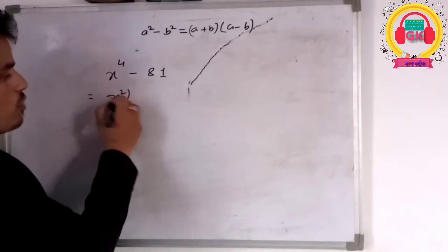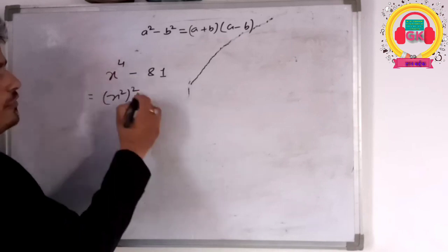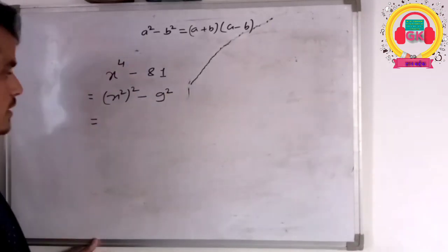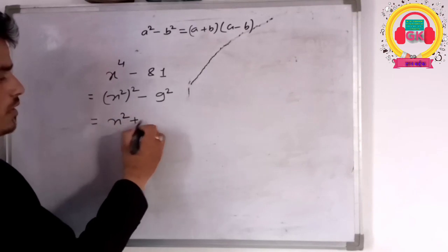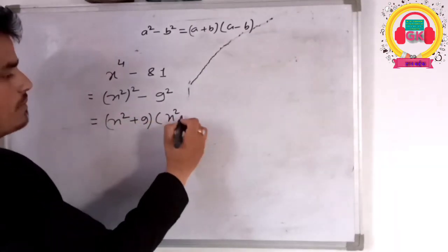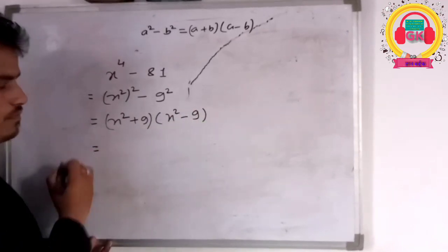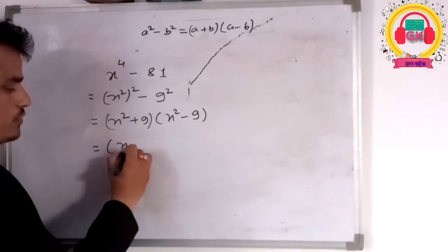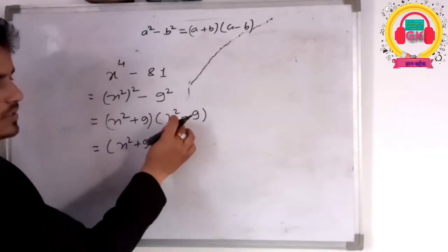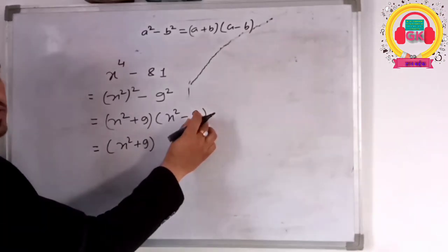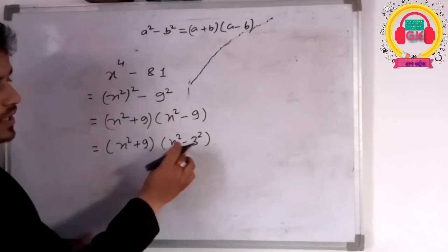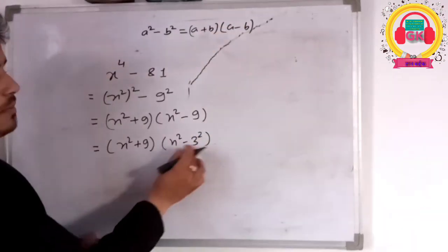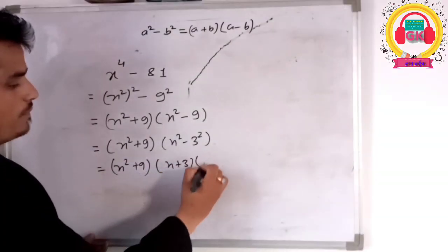For example, x squared minus nine. Nine is a perfect square — the square root of nine is three — so x squared minus nine equals x squared minus three squared. Using a squared minus b squared equals a plus b times a minus b, this gives us x plus three times x minus three.